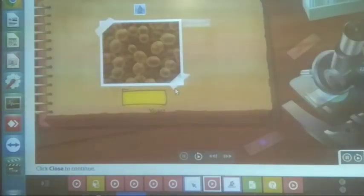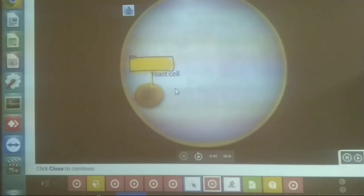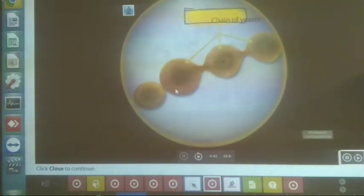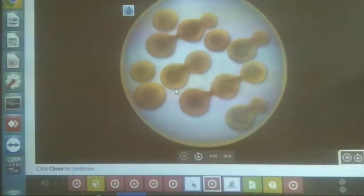Budding is a type of asexual reproduction that takes place in organisms such as single-cell yeast. A small bud-like projection, the bud, is formed in the parent organism. The nucleus of the yeast divides into two parts and one part of it is taken by the bud, creating a fully grown individual organism. This new organism may either become detached from the parent organism or remain attached and form a chain of yeasts. This is how a large number of yeast cells are produced in a short term.